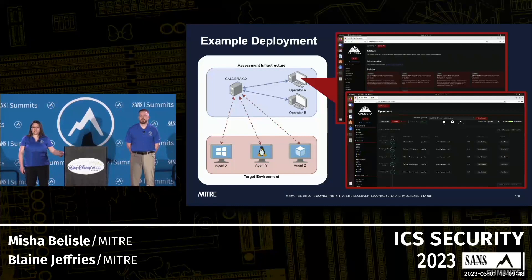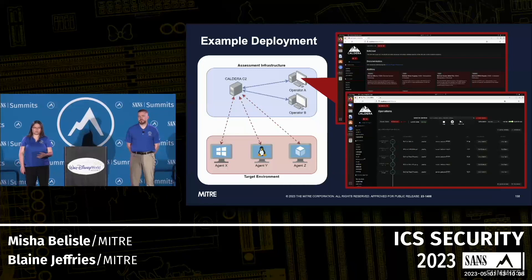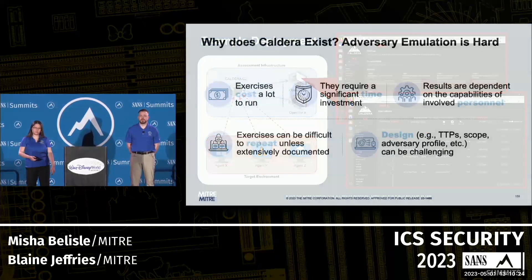Here is an example deployment. In the blue section we have a sample infrastructure where you can see a Caldera C2 server already stood up, interacting with the operator workstation — from which we have screenshots representing some of our BACnet protocol plugin capability. There's a live operation shown, and you can see it represents a variety of capability with a great UI. At the bottom there's support for Windows, Linux, and macOS execution.